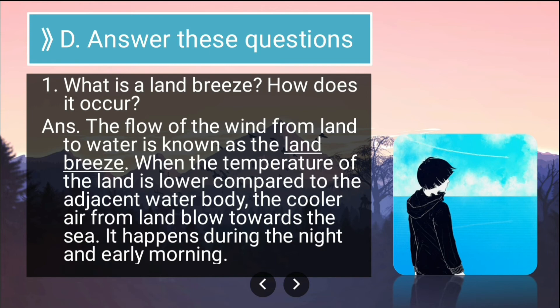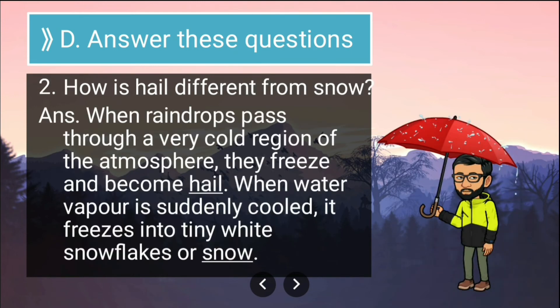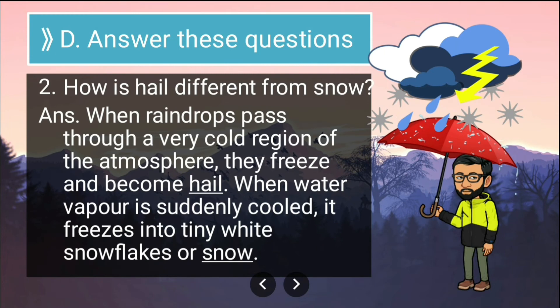Second long answer: how is hail different from snow? When raindrops pass through a very cold region of the atmosphere, they freeze and become hail. Whereas when water vapor is suddenly cooled, it freezes into tiny white snowflakes, which is snow. So raindrops cooling = hail; water vapor cooling = snow.